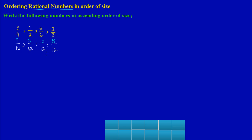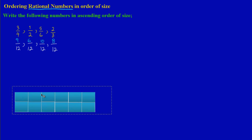Now that I've found the LCD it's easier to make a comparison based on which fraction is largest, which is smallest, or which order they go in ascending order. To illustrate this a bit clearer I'm going to use some diagrams. You may not be required to use diagrams in the exam, but as a beginner's course I'll break it down as simply as possible so you can understand clearly.